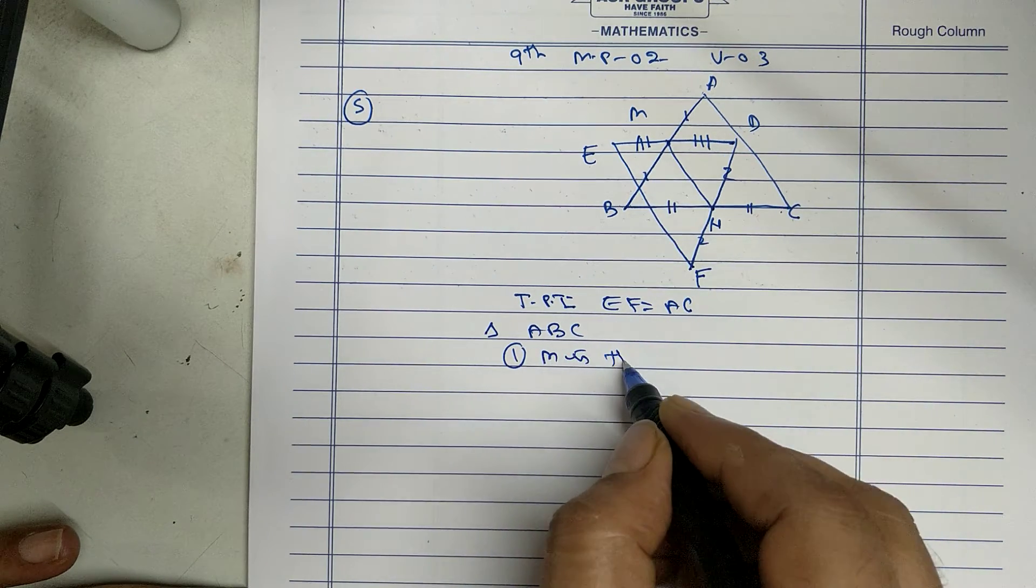Take triangle ABC first. M is the midpoint of AB, given. N is the midpoint of BC, given. Therefore, MN is half of AC.